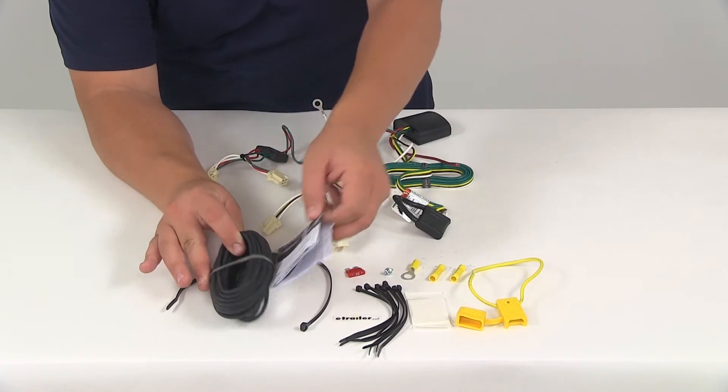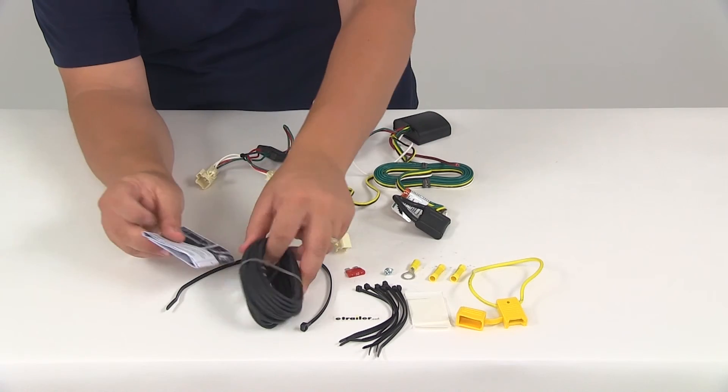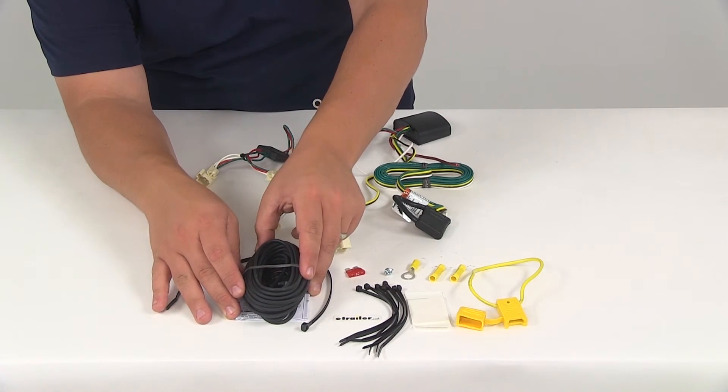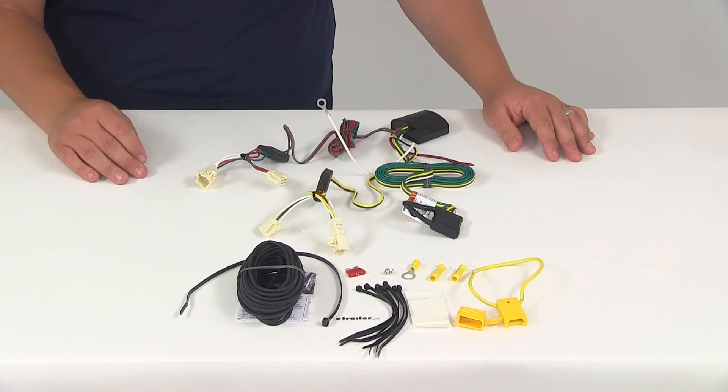It's going to come with very detailed instructions. These are going to walk you through the installation process step by step, and we're going to recommend that you use a small amount of grease on all electrical connections, like the plugs on your vehicle and the four-pole connector itself. That's going to help keep out any type of corrosion.